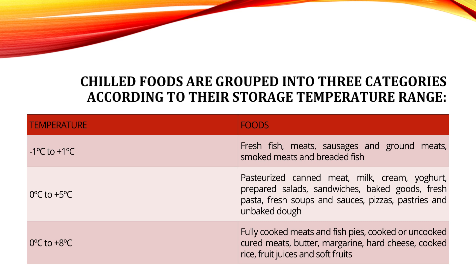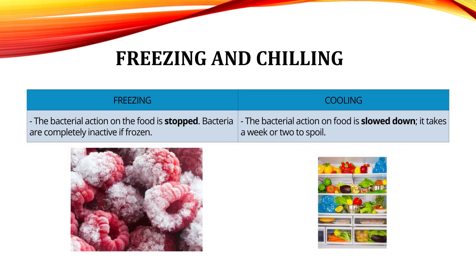There are three categories of chilled food according to their storage temperature. The lowest cooling temperature is between minus 1 to 1 degree Celsius for fresh fish or meat. The second temperature range is 0 to 5 degrees for pasteurized meat, milk, pastries, and baked goods. Higher temperatures between 0 to 8 degrees are for fully cooked meats, cheese, and fruits.